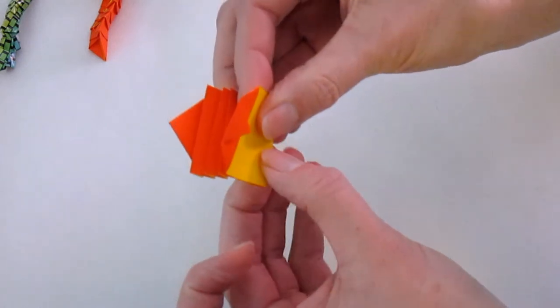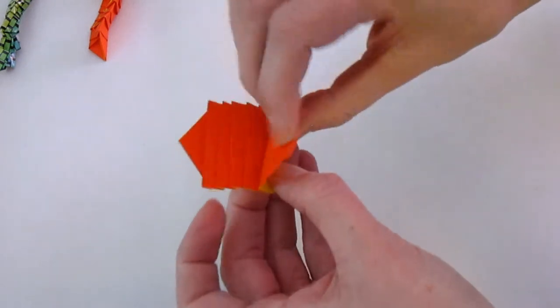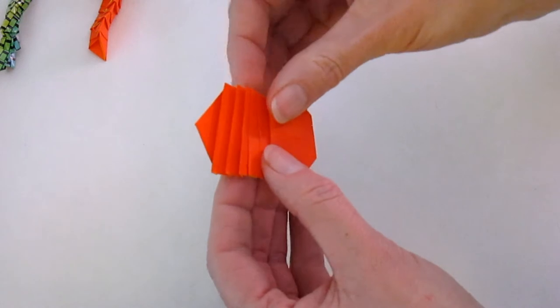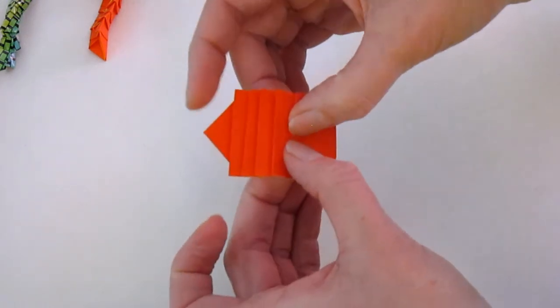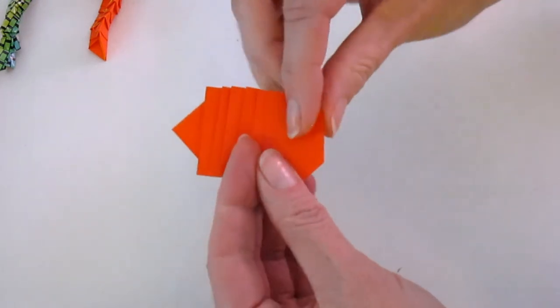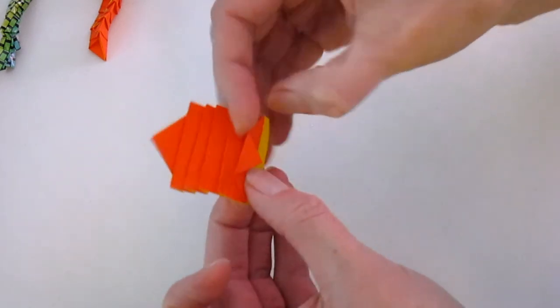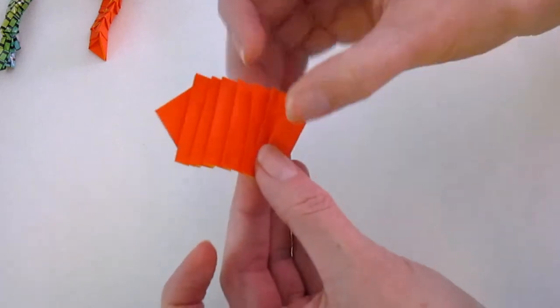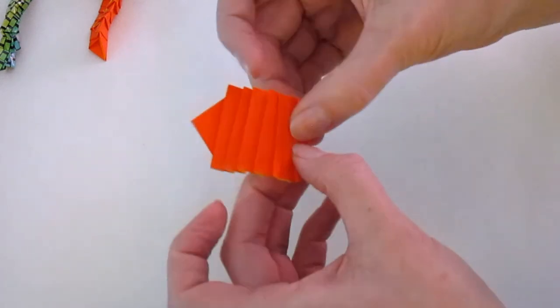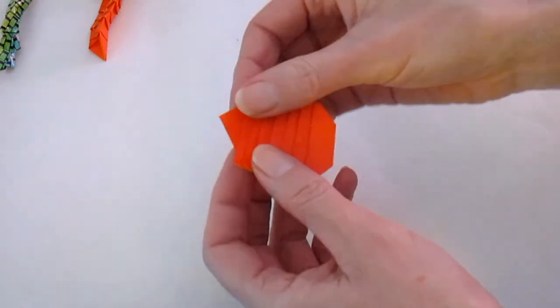We're making an origami caterpillar, and you can find the downloadable instructions at www.TheDayWeWentToThePark.com. This caterpillar you can see in a children's book called The Day We Went To The Park. All right, you finish your creases there.